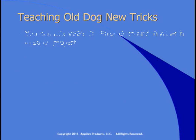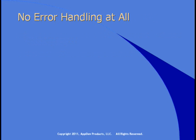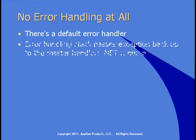If you're coming to .NET from VB6 or converting a VB6 application to .NET, be aware that you can use both the VB6-style on-error-goto and the .NET-style try-catch in the same project — not in the same procedure, but in the same project. Exception handling is built into the .NET framework and there is a default exception handler at work, so you don't have to write your own code to handle exceptions. You can rely on the .NET runtime to handle exceptions.